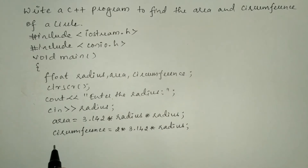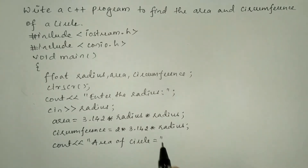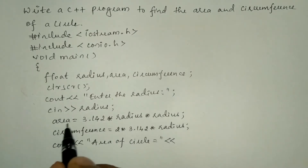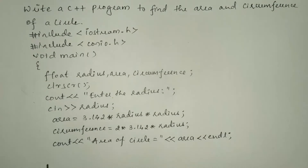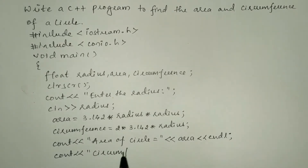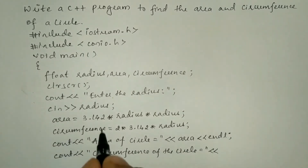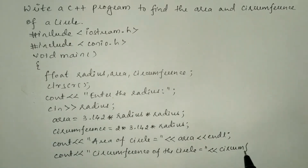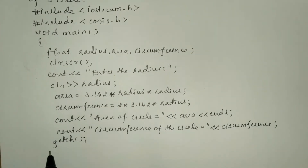Next we are going to print using cout with the stream insertion operator: "Area of circle is equal to", then the variable area, followed by endl to bring the cursor to the next line. Similarly, another cout statement will print: "Circumference of the circle is equal to", followed by the variable circumference. Then we write getch() and the closing curly brace for the main function.